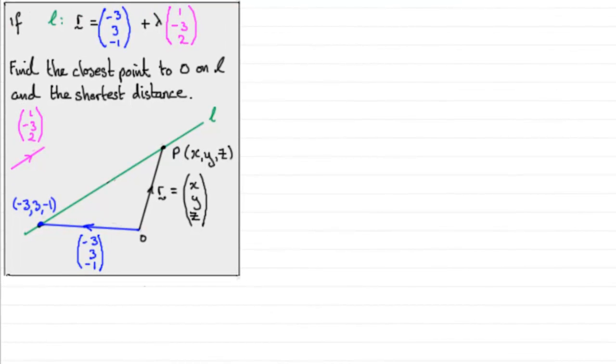Hi. Now when you're working with vector equations of lines, quite often you can be asked to find the coordinates of a point on the line which is closest to the origin O, and also the shortest distance to the line L from the origin.